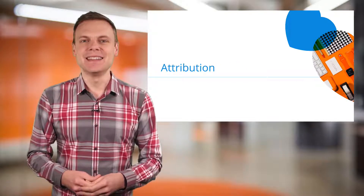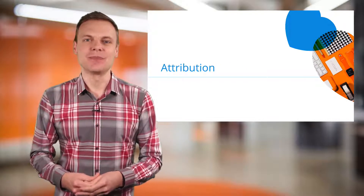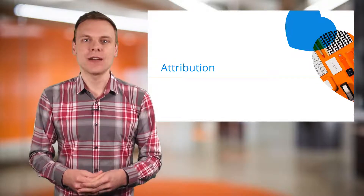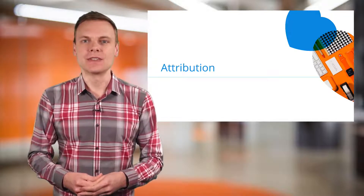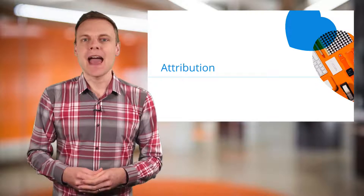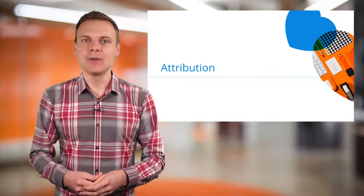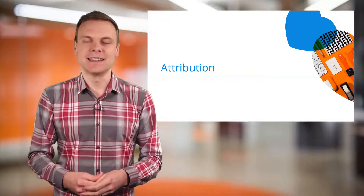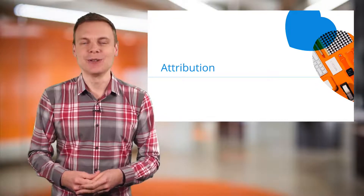Number 2 is attribution. Attribution allows you to control how credit for conversions is given to the campaign, ad group, keyword, match type and device inside Google AdWords.